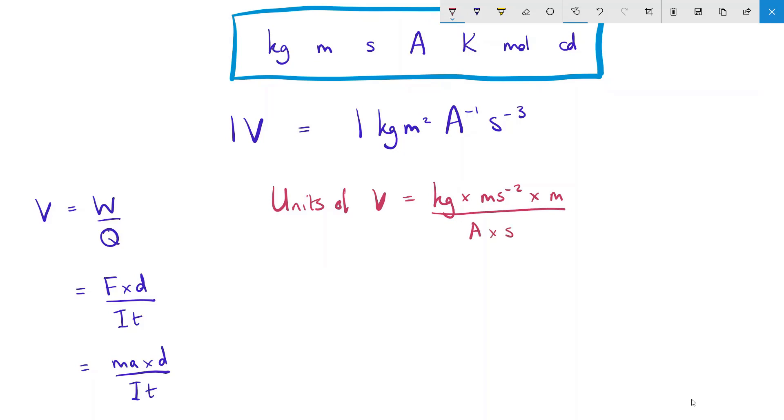And then I'd recommend expressing the divide by as multiplied by negative powers instead, so we get... And then carefully simplify. Notice it doesn't matter what order you have the base units in.